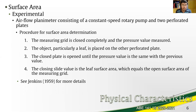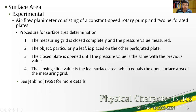Besides indirect methods using related material parameters, the surface area can also be determined using experimental methods. There is the physical method of using an airflow planimeter, based on the procedure outlined by Jenkins in 1959. It requires an airflow planimeter setup consisting of a constant-speed rotary pump and two perforated plates. The measuring grid is completely closed initially and the pressure value is measured, then the object — particularly a leaf — is placed on one of the perforated plates.